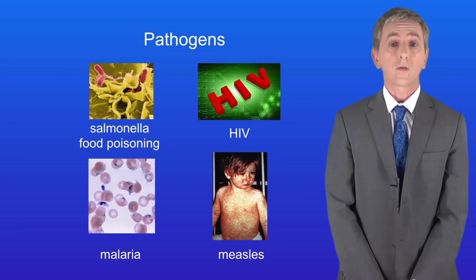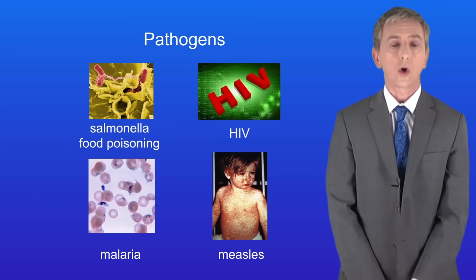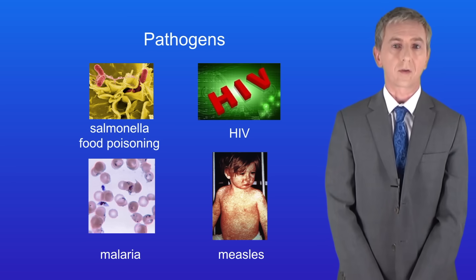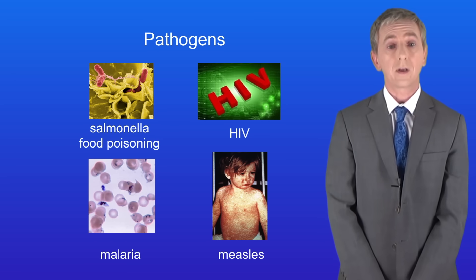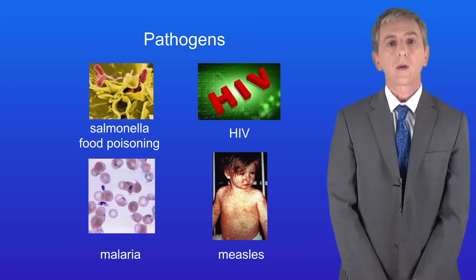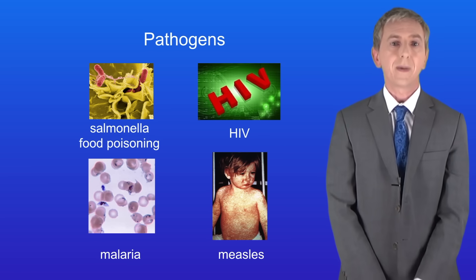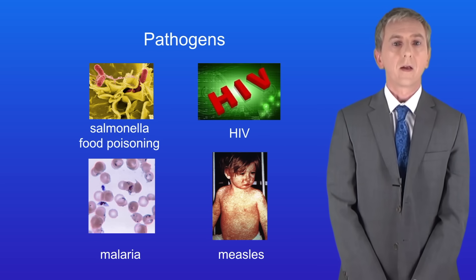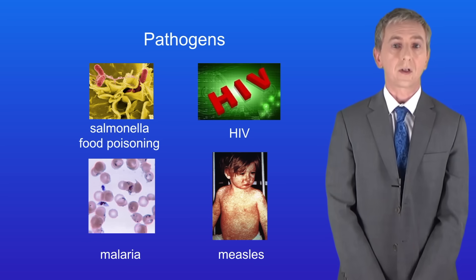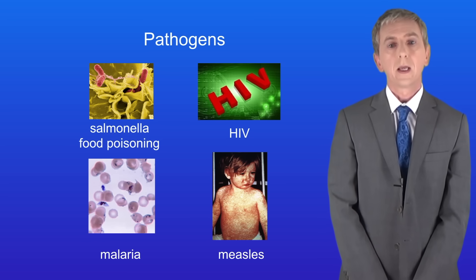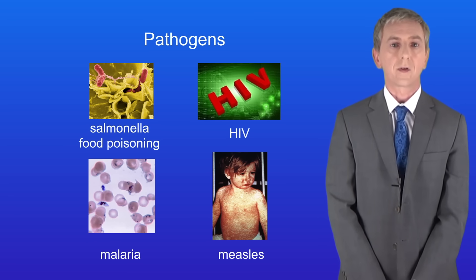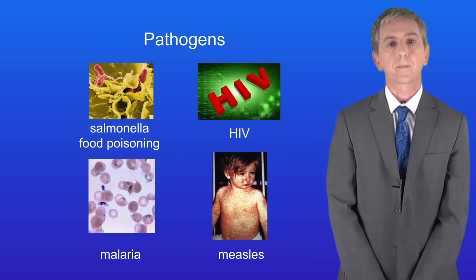We've already seen that lots of human diseases are caused by pathogens — for example, salmonella food poisoning, HIV, malaria and measles. Now the body has two main defence systems against pathogens: the non-specific defence system and the immune system. In this video we're looking at the non-specific defence system.